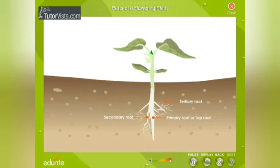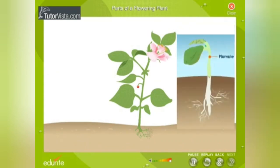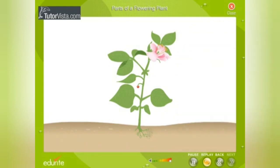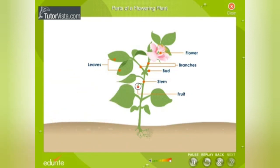Every root has a cluster of very fine thread-like root hairs for absorbing water and mineral salts from the soil. Let us now move on to learn about the shoot system of a plant. The shoot system forms the aerial portion of a plant. It develops from the plumule and remains above the ground. It consists of a main stem, leaves, buds, branches, flowers, fruits, and seeds.